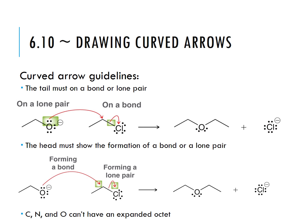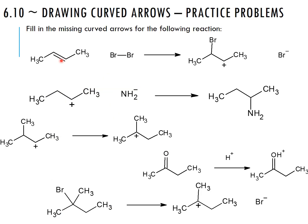Always remember that carbon, nitrogen, and oxygen cannot have expanded octets, so sometimes extra arrows are needed to show the flow of electrons to prevent that.